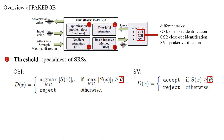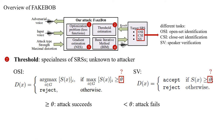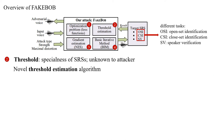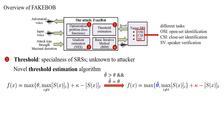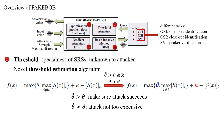Secondly, unlike image classification, speaker recognition systems make decisions based on a predefined threshold. Only when the maximal score of adversarial voices is larger than the threshold can the attack succeed. Unfortunately, this threshold is unknown to the attacker. To address this problem, we propose a threshold estimation algorithm. Once we obtain the estimated threshold, we replace the true threshold in the loss function with the estimated one. Our estimated threshold is larger than the true threshold, which guarantees that the attack will succeed. At the same time, our estimated threshold is not too far from the true threshold, so the attack will not be too expensive.